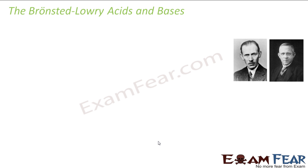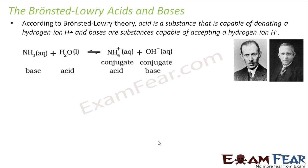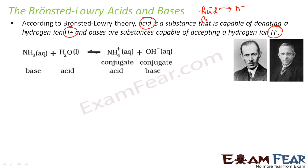Then came Bronsted and Lowry. They are two people who gave the definition of acid and base. They told that acid is a substance capable of donating H+ ions, and base is a substance capable of accepting H+ ions. They removed the OH- ion requirement. So acid gives H+, base takes H+. With this definition, ammonia can easily be identified as a base.